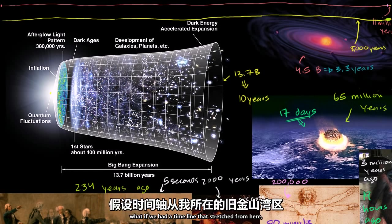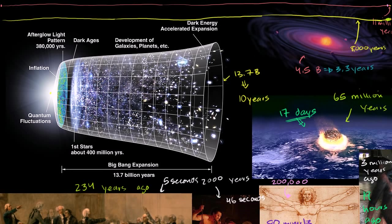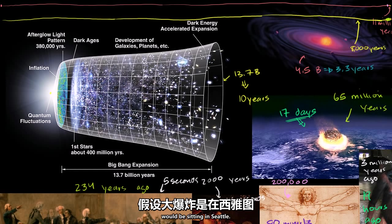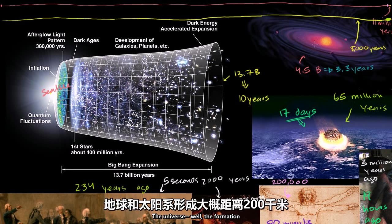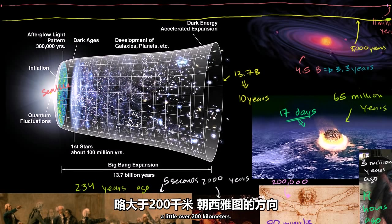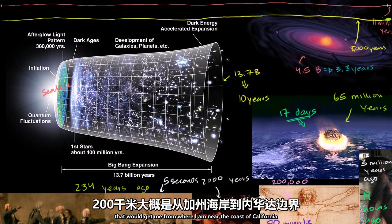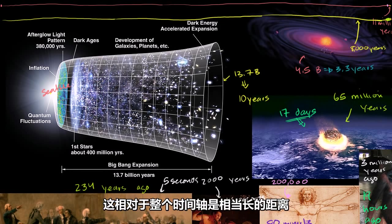Another way to think about it: what if we had a timeline that stretched from here in the San Francisco Bay Area all the way 1,300 kilometers to Seattle? The Big Bang would be sitting in Seattle. The formation of the Earth and the solar system would be about 200 kilometers away — roughly the distance from the California coast to the Nevada border. That's still a pretty good distance relative to the entire timeline.